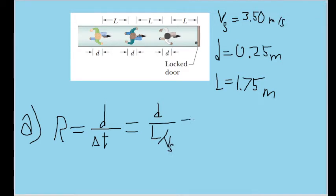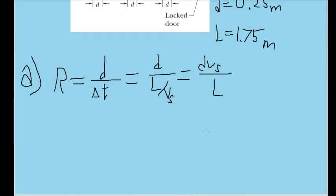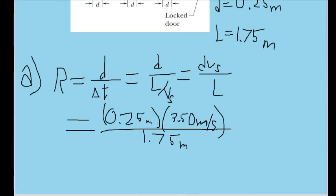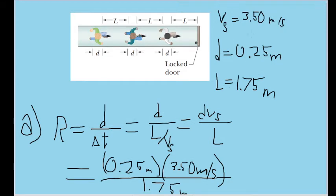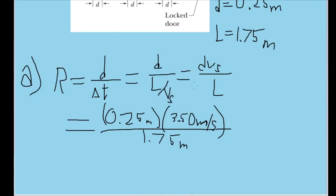Let's rewrite this formula in a slightly different way, which will bring V_s into the denominator. Now we'll plug in values. Plugging in the depth of each person, the speed of each person, 3.5 meters per second, and the length between each person, we find a rate of 0.50 meters per second.